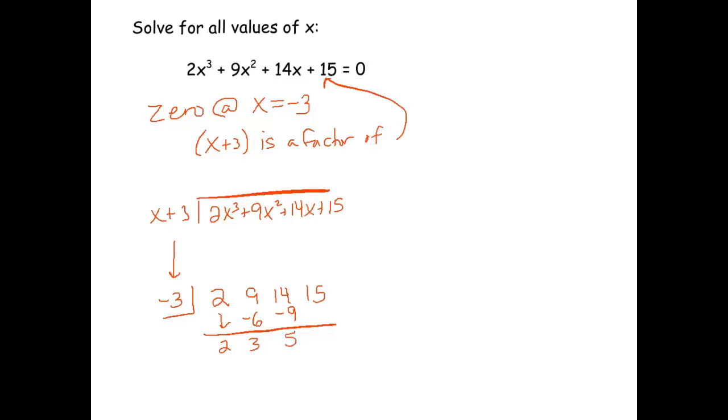5 times negative 3 is negative 15. Add down, we get 0. Excellent. We have a remainder of 0. That means that this is representing another factor.